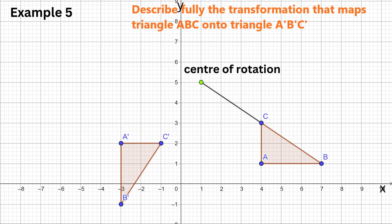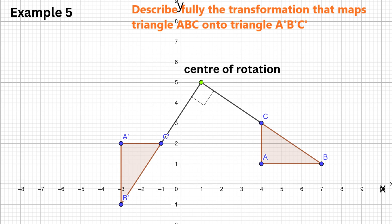Draw a line from the center of rotation to point C on the original triangle, and draw another line from the center of rotation to C'. Measure the angle formed between both lines, and we get a right angle. So the angle of rotation is 90 degrees. The image triangle is positioned to the left of the original triangle.